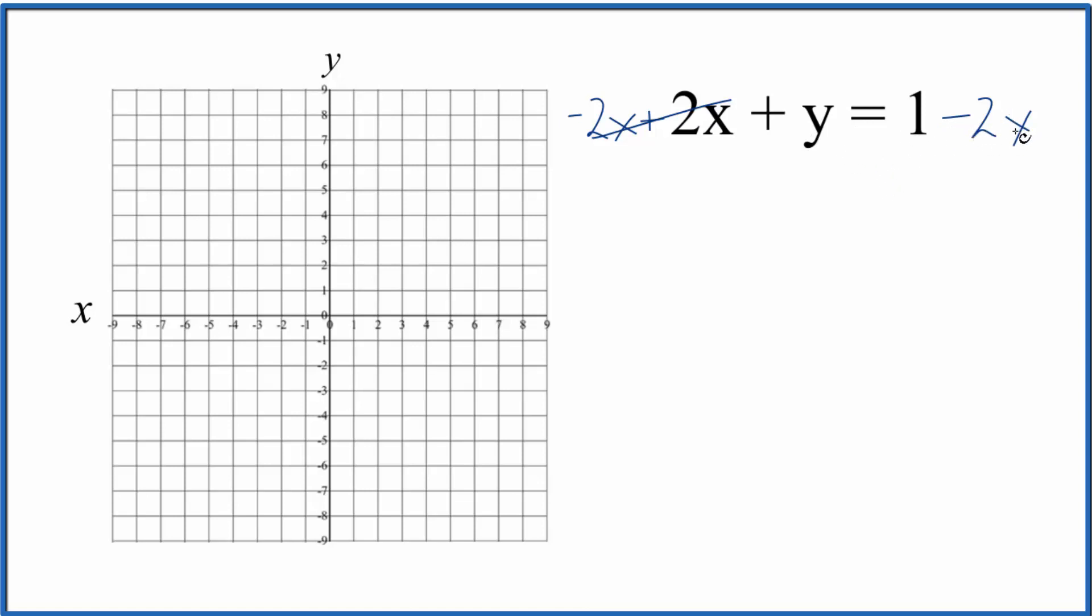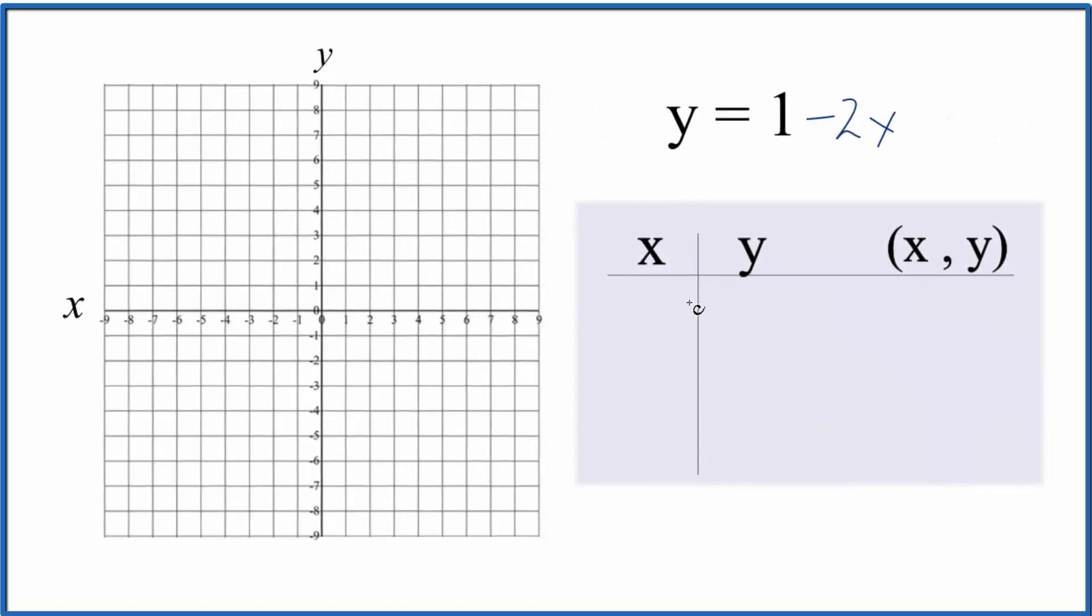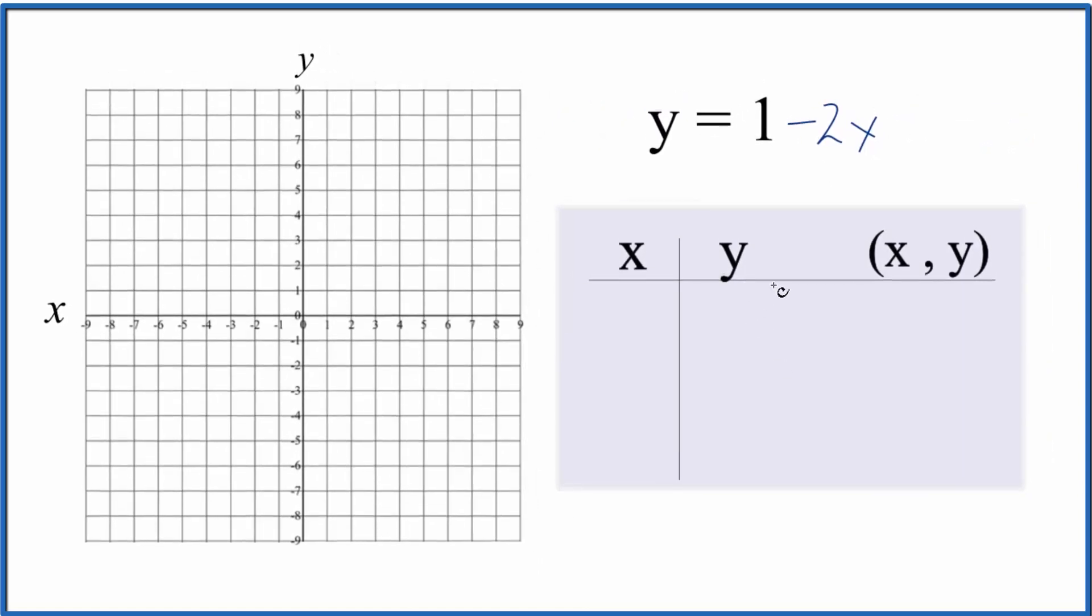Now we can put values in for x and see what value we'll get for y. Let's do that. So we're going to choose some values for x that will give us values for y, and we want them to fit on the graph here, on the graph paper we're using. You can choose any numbers, but if you choose numbers that fit on the graph paper, it makes life a lot easier.